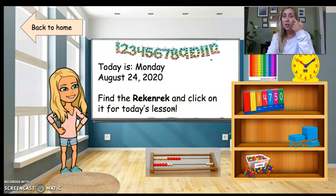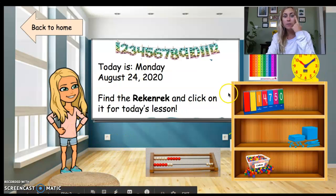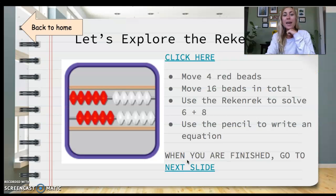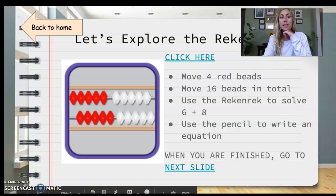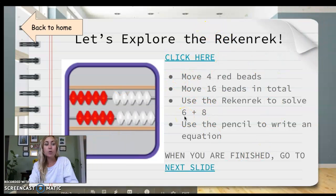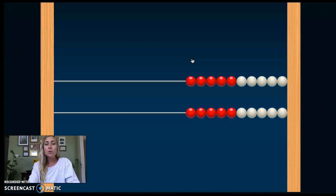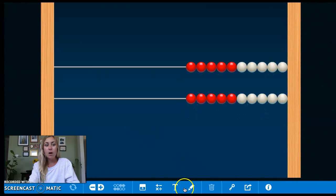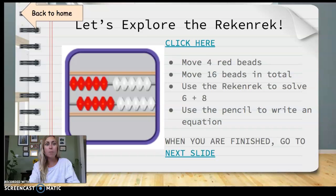Find the Rekenrek and click on it for today's lesson. Think in your brain — which of these tools could be a Rekenrek? That's right, this one. I'm going to click it, and when you click it you're going to see a bunch of directions on what to do with this tool. When it says click here, you can click there, and then you see the actual tool on your computer. I'm going to stretch it so you can see all of it and go back and forth.